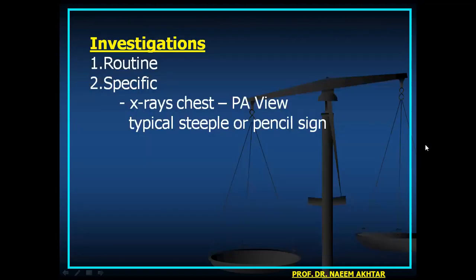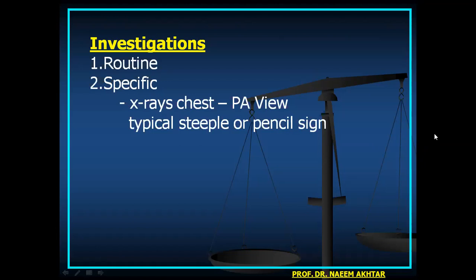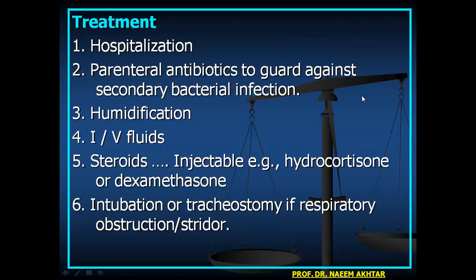Investigations: X-ray chest PA view is specific — a typical steeple or pencil sign may be seen. Following the airway upward, the lumen is obliterated due to edema of the airway wall in the subglottic region. Treatment: hospitalization, parenteral antibiotics against secondary bacterial infection, humidification, IV fluids, steroids — especially injectable, for example hydrocortisone or dexamethasone. Intubation or tracheostomy may be needed if respiratory obstruction or stridor develop.